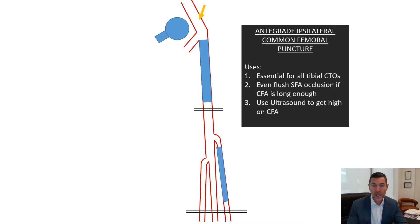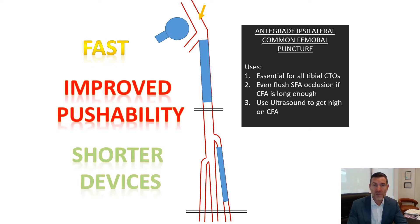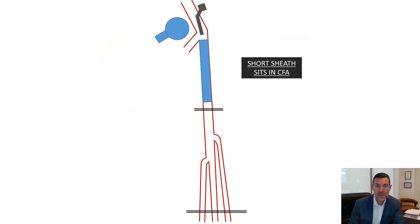For all other cases, I use an antegrade ipsilateral common femoral artery access, because it's fast, gives improved pushability, and allows us to use devices with shorter shaft lengths. We place a short sheath in the common femoral artery and do our best to cross in an antegrade direction. But sometimes this is impossible, and this is where retrograde crossing becomes really important.